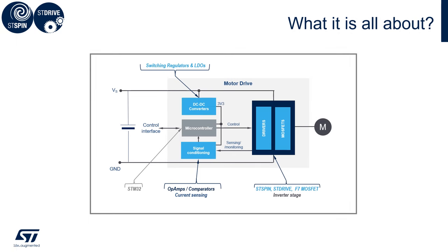Here we see a quite standard block diagram of a motor control application. When we talk at ST about low-voltage motor control, we talk about the bus below 100 volts — this is ST's definition of low-voltage. Starting from left to right, on the left side we see the power supply. This can be, for example, a lithium-ion battery or an industrial battery in the range of 20 up to 30 volt, or a DC bus.